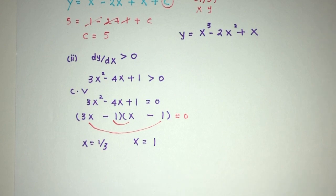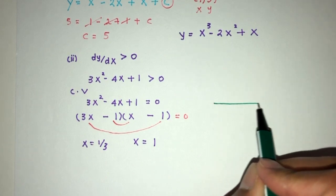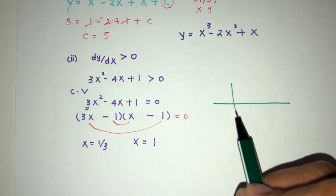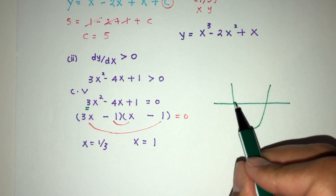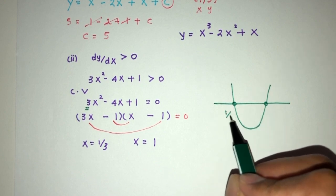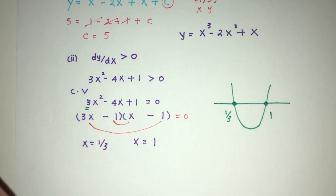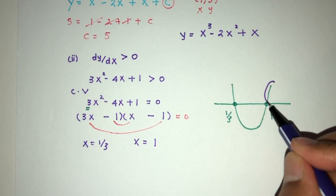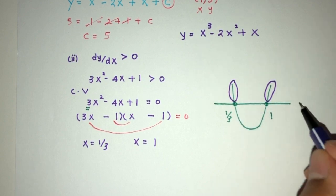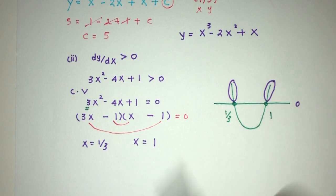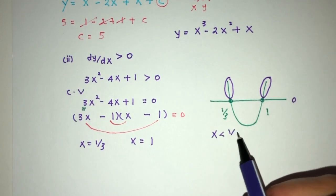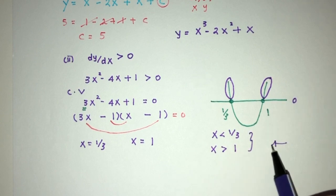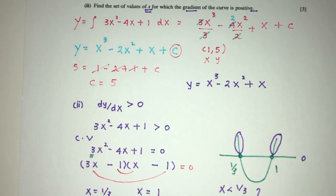This is the critical values that we have to use to find the range of values of x that we can use. Because here we have a positive value, it will be a minimum curve. This is the critical values over here. That will be 1 over 3 and that will be 1. We need the values of x where it is more than 0. It has to be up, more and more. As you can see, above is 0 here. Above 0 will be these two sides. So x have to be less than 1 over 3 and x have to be more than 1. So these will be the answer for the set of values of x for which the gradient is more than 0.